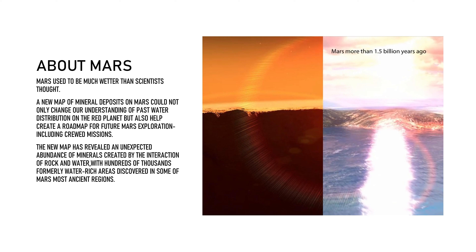Mars used to be much wetter than scientists thought. A new map of mineral deposits on Mars could not only change our understanding of past water distribution on the Red Planet, but also help create a roadmap for future Mars exploration, including field missions. The new map revealed an unexpected abundance of minerals created by the interaction of rock and water, with hundreds of thousands of formerly water-rich areas discovered in Mars's most ancient regions.